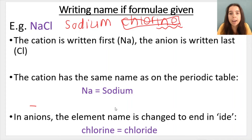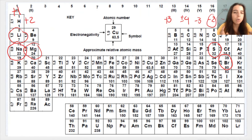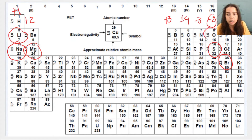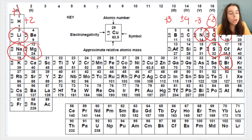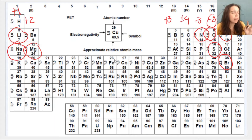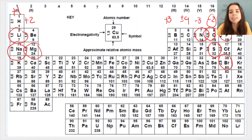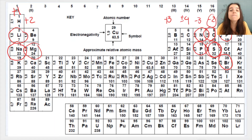We always change the anion to end in '-ide'. So for example, if our cation bonds with oxygen, it'll change to oxide. If it bonds with fluorine, it'll change to fluoride. If it bonds with nitrogen, it'll change to nitride — don't get confused by nitrates, that's something different. Phosphorus becomes phosphide. Sulfur becomes sulfide. It always changes to '-ide'.